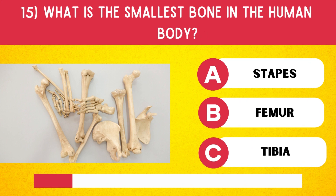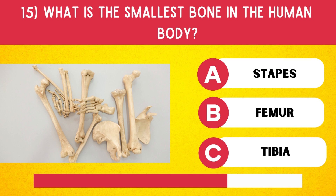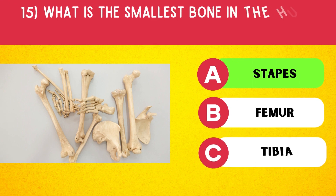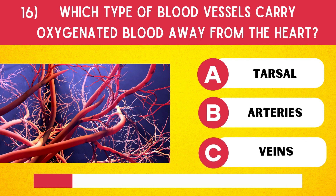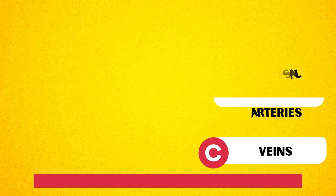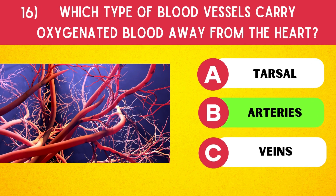What is the smallest bone in the human body? Stapes. Which type of blood vessels carry oxygenated blood away from the heart? Arteries.